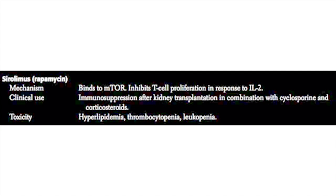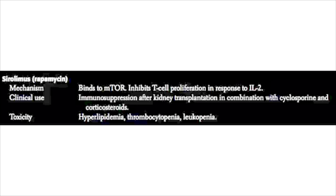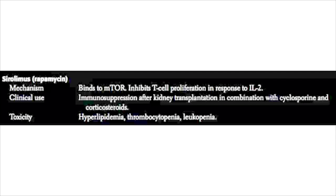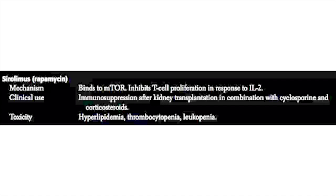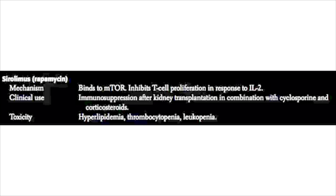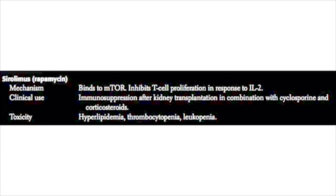Sirolimus works differently — it is not a calcineurin inhibitor. Rather, it works by binding to a molecule called mTOR. mTOR is a necessary part of the pathway within the cell whereby activation of the IL-2 receptor causes the T cell to proliferate. So mTOR is part of that cellular signaling pathway from IL-2 receptor activation all the way down to T cell proliferation. If you block mTOR, you effectively block that pathway. These patients also get some bone marrow suppression, with both thrombocytopenia and leukopenia. Notably, sirolimus does not carry a significant risk of nephrotoxicity.